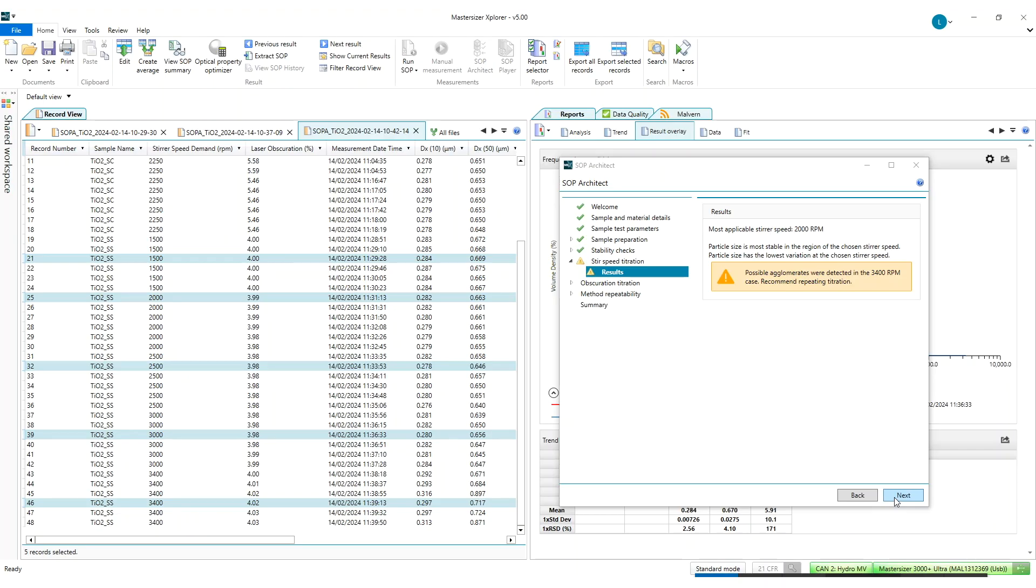So now that our stir speed titration has finished you can see that SOP Architect advises that the most optimum stir speed is 2000 rpm. In addition to this you'll also see that we have a warning come up on the screen saying that at higher stir speeds notably 3400 rpm we may be forming agglomerates.